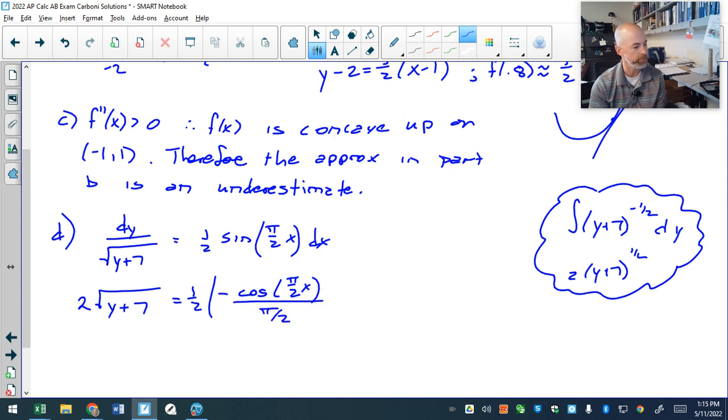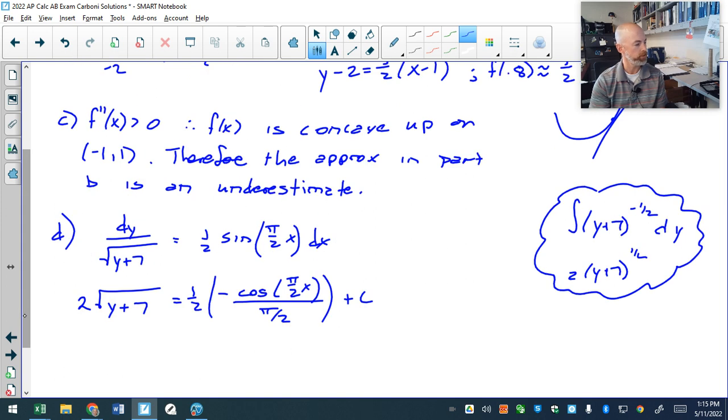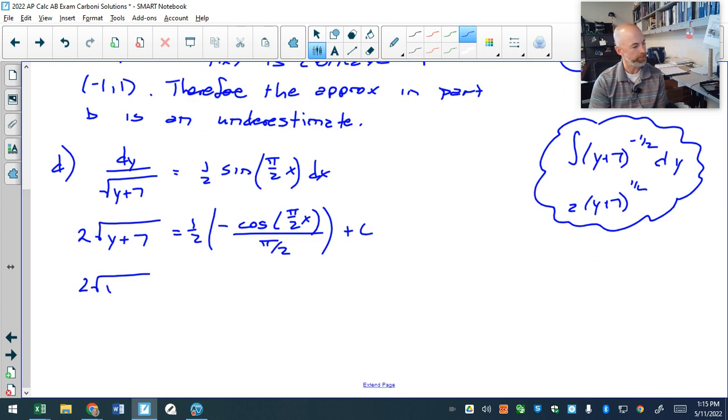that is technically a u-sub problem, but that structure is so common, we do the anti-derivative of like sine of a times x, you'll end up dividing by that a. So I found the anti-derivative, don't forget your plus c. I'm going to clean this up just a little bit, because we have some more work to do here. So I'm going to say 2 root y plus 7 is equal to, and this will clean up to negative 1 over pi times the cosine of pi over 2x plus c,